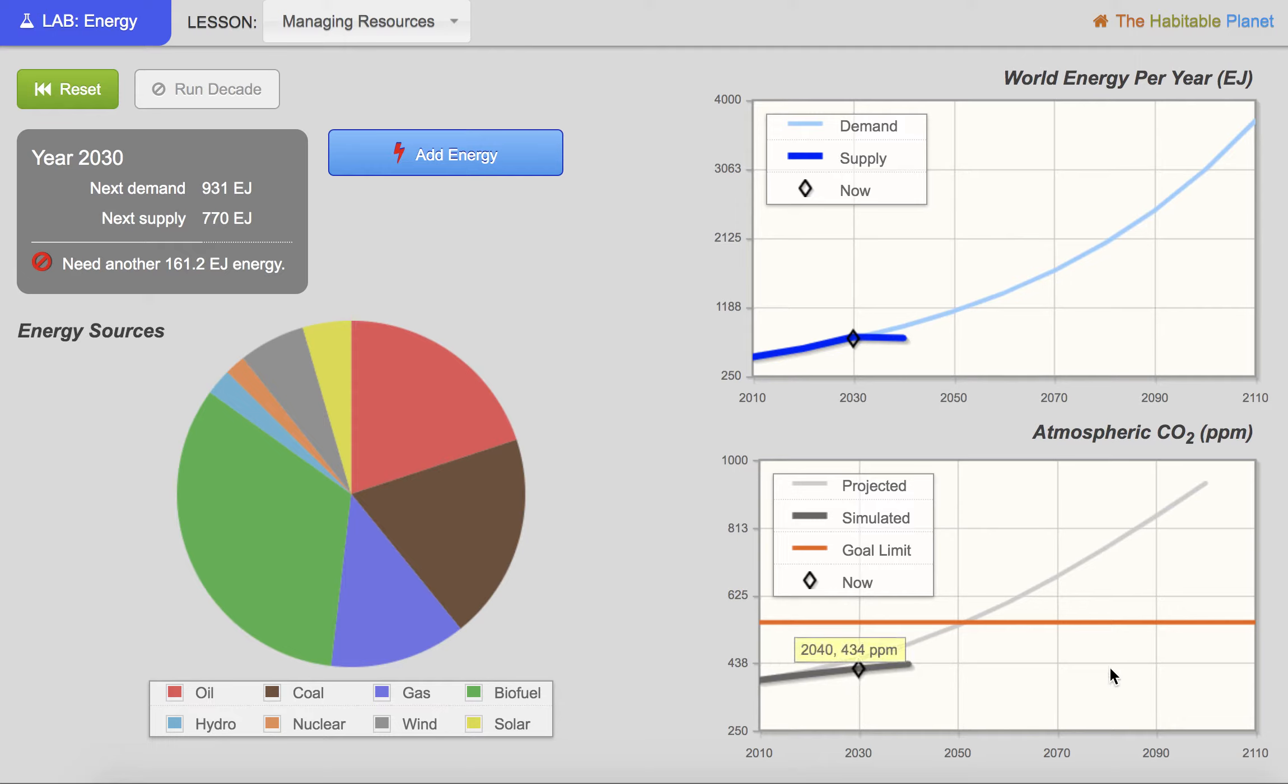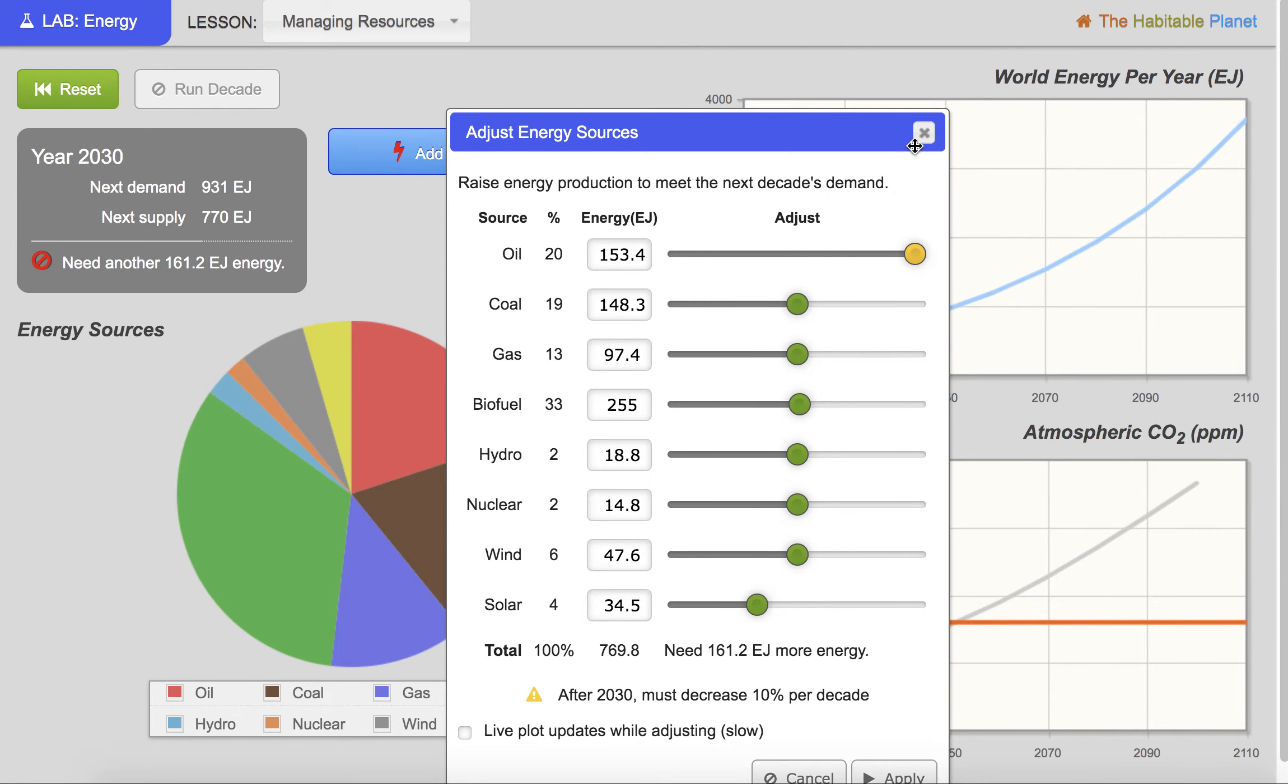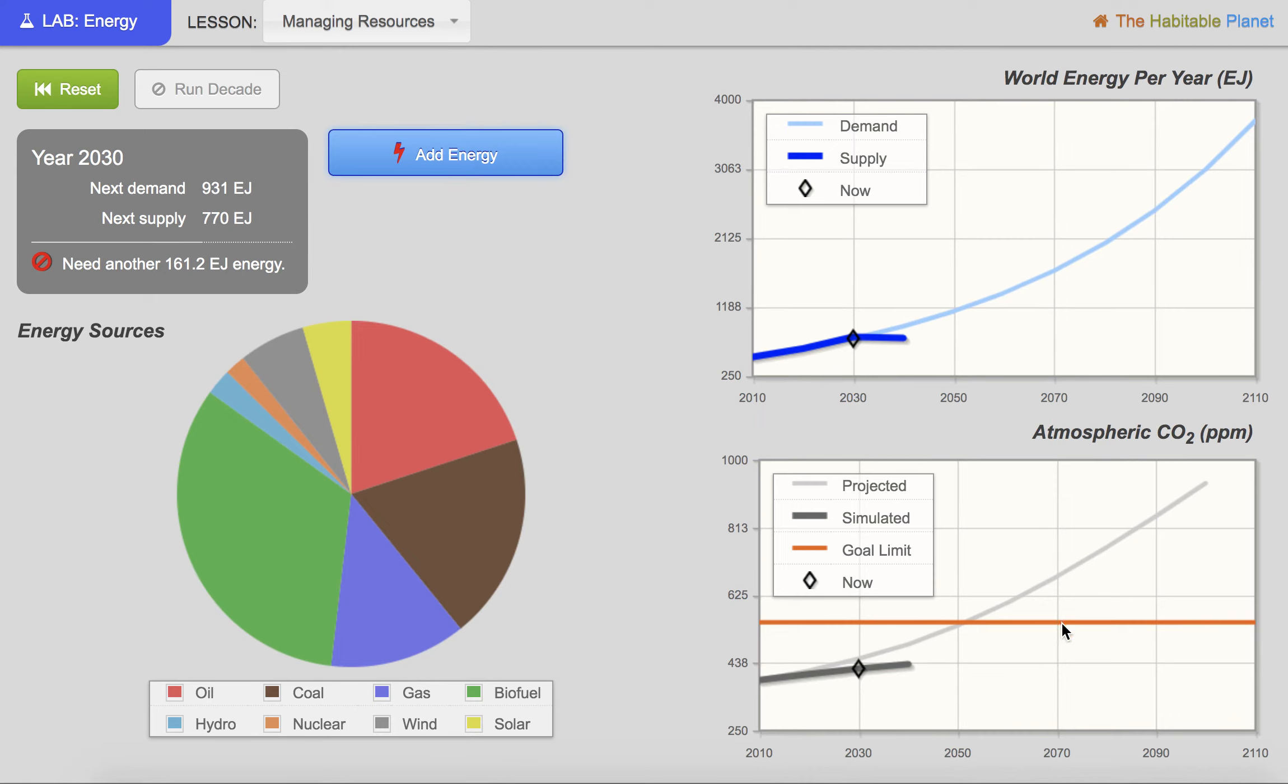So you're going to run through this until you get all the way to the end if you're able to make it there. So a couple of things will happen that might make it so that you can't actually finish this simulation, in which case you would need to reset. If you exhaust some of your resources here, and you make it so that you can't actually meet the energy need that you have, then the system will say that you can't go on. It'll also tell you if you pass this orange line. So you have a couple of fail safes here to keep you on track.